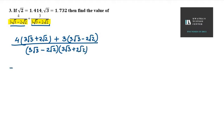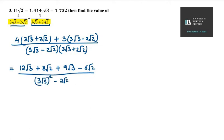So now simplify the numerator part. So it will be 12√3 + 8√2 + 9√3 - 6√2. At the bottom, we will have a² - b². So (3√3)² - (2√2)². So you get -6√2, so 2√2 is here.